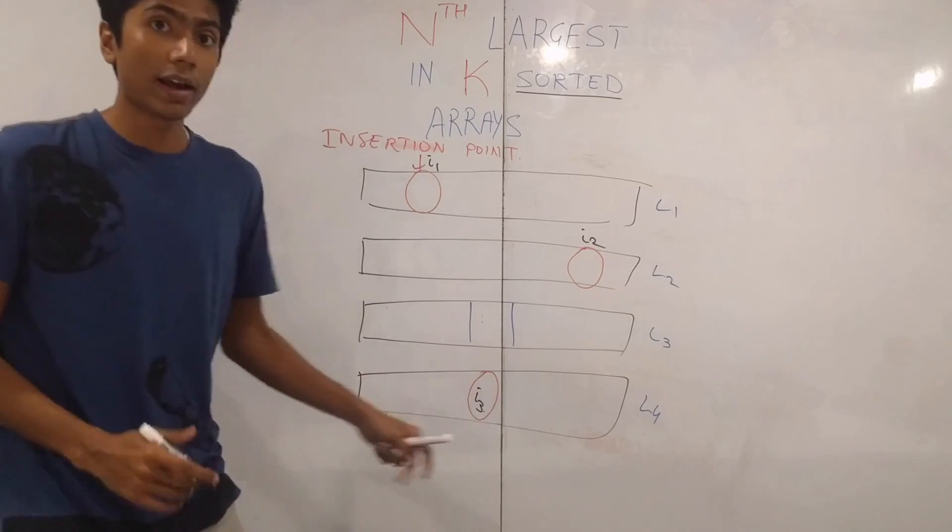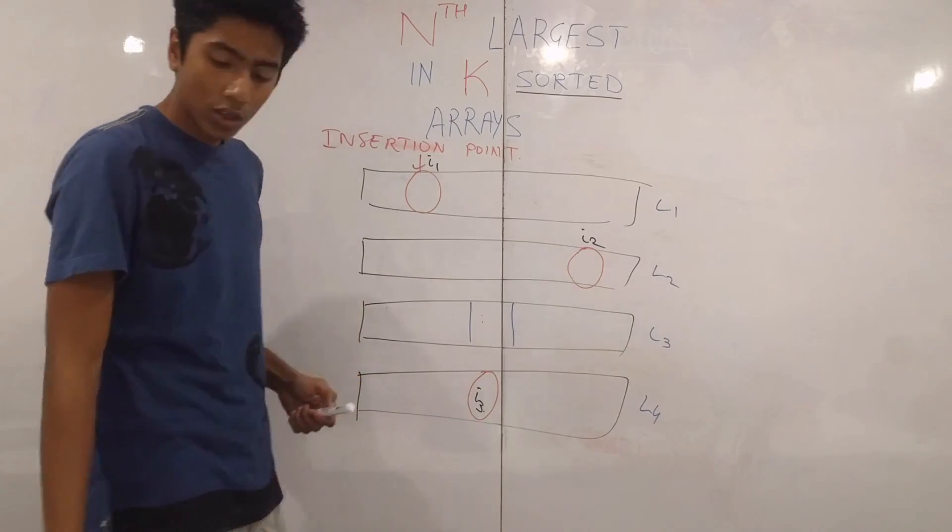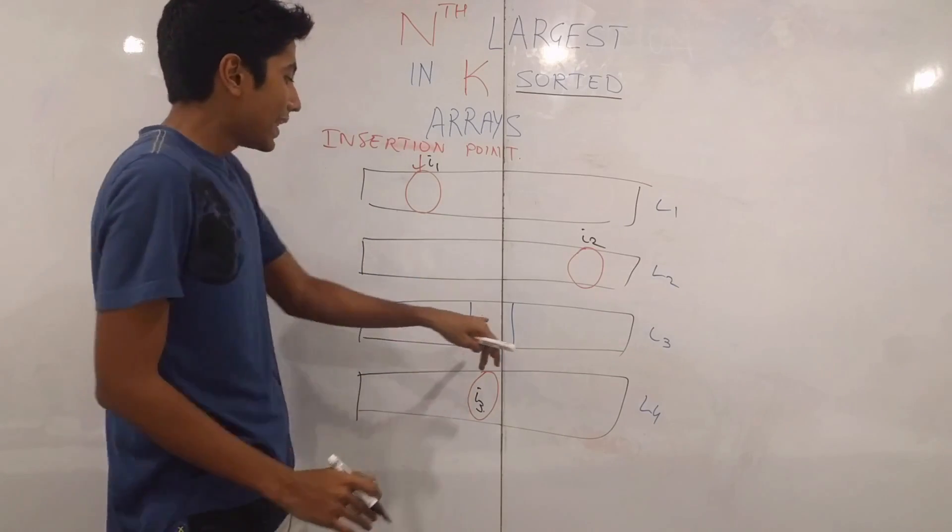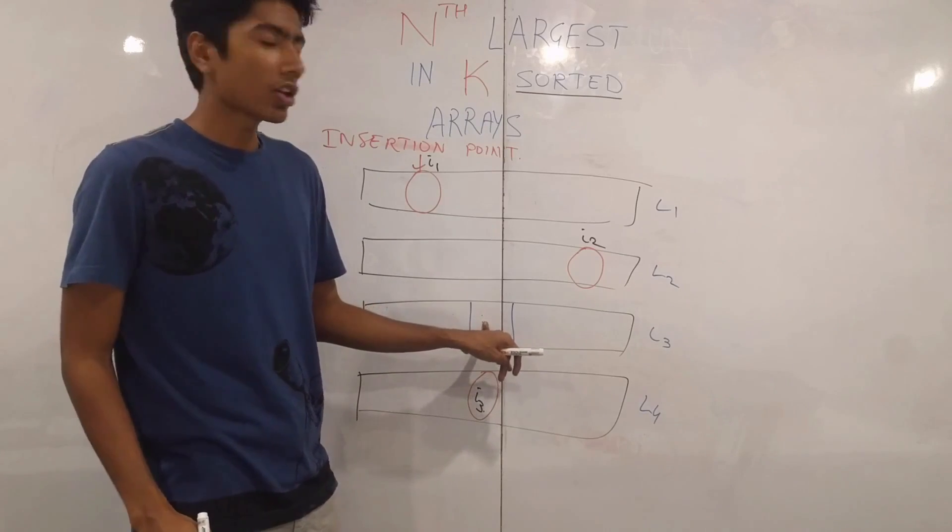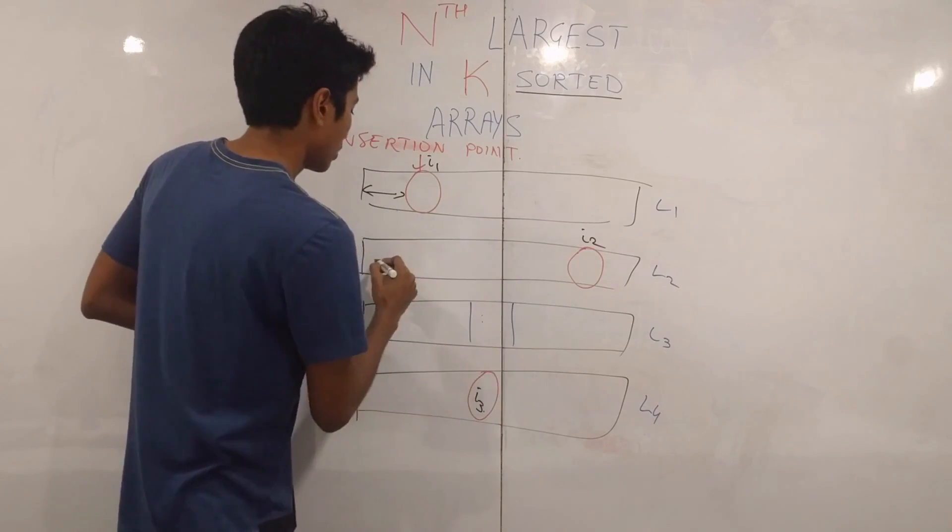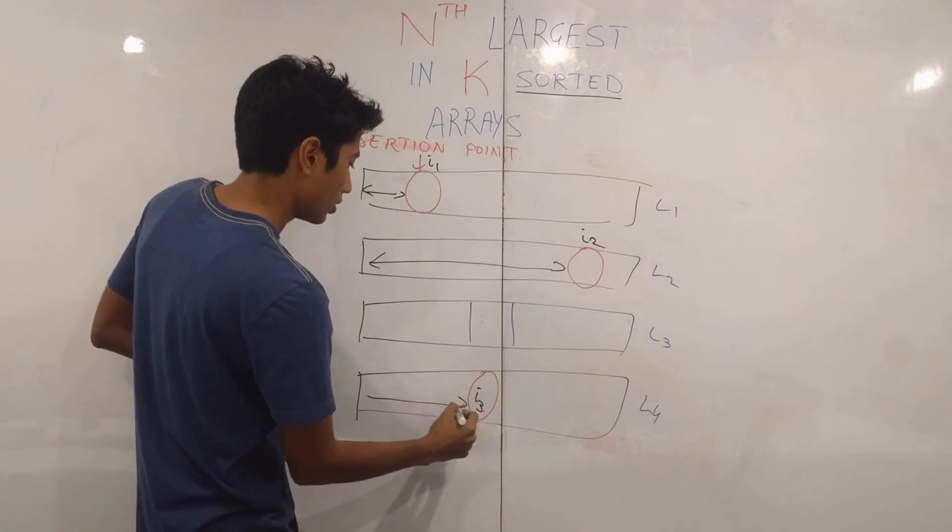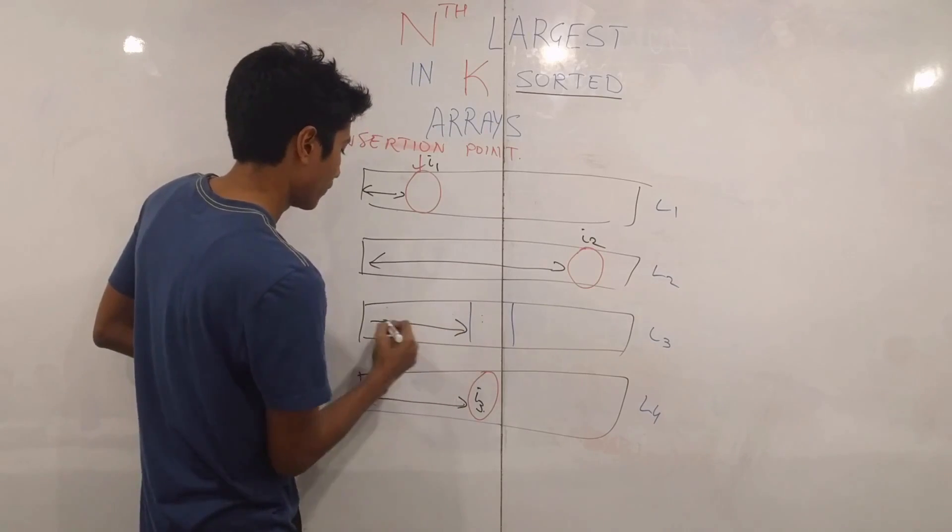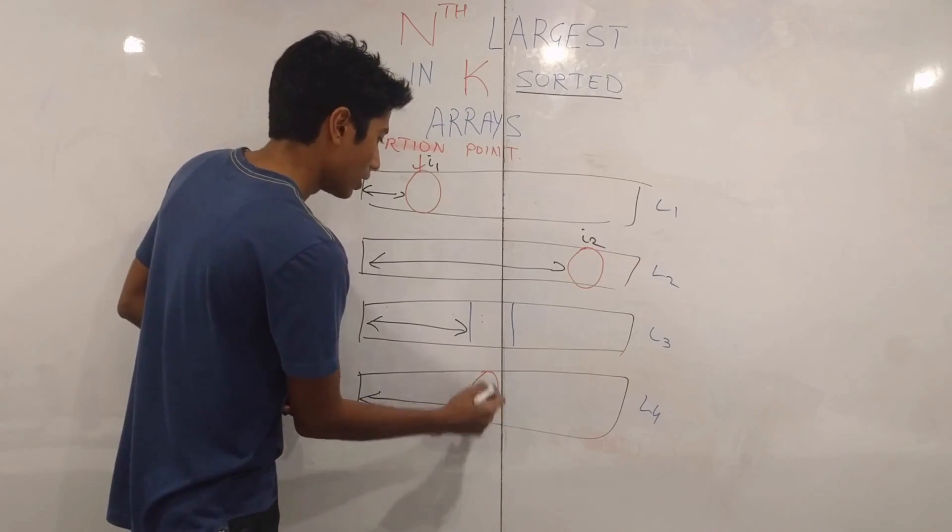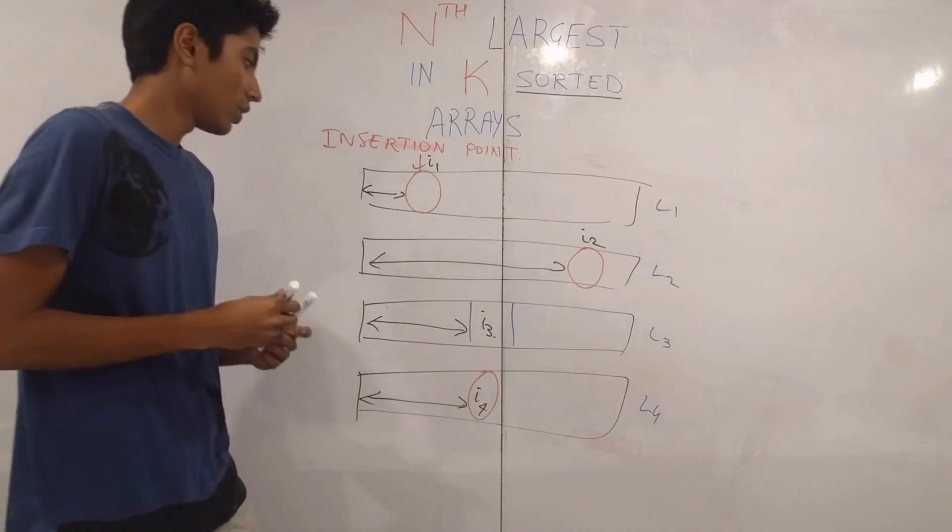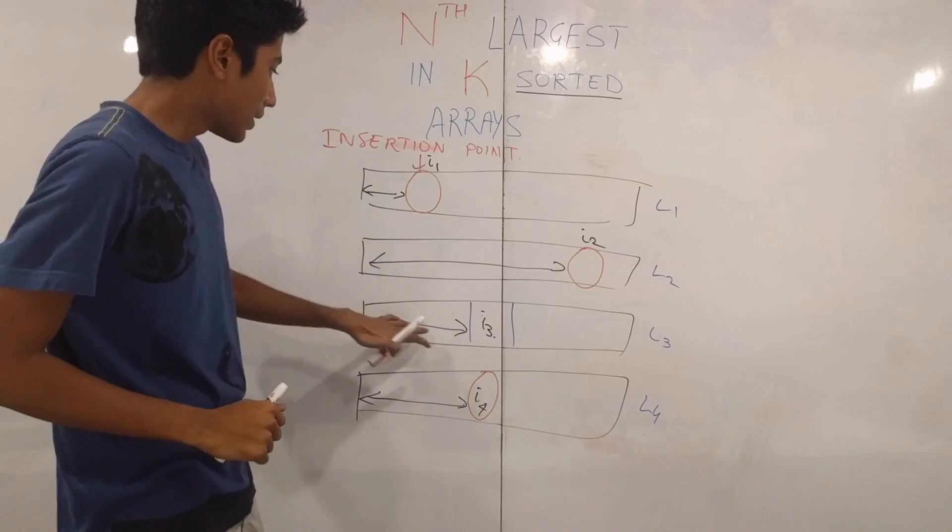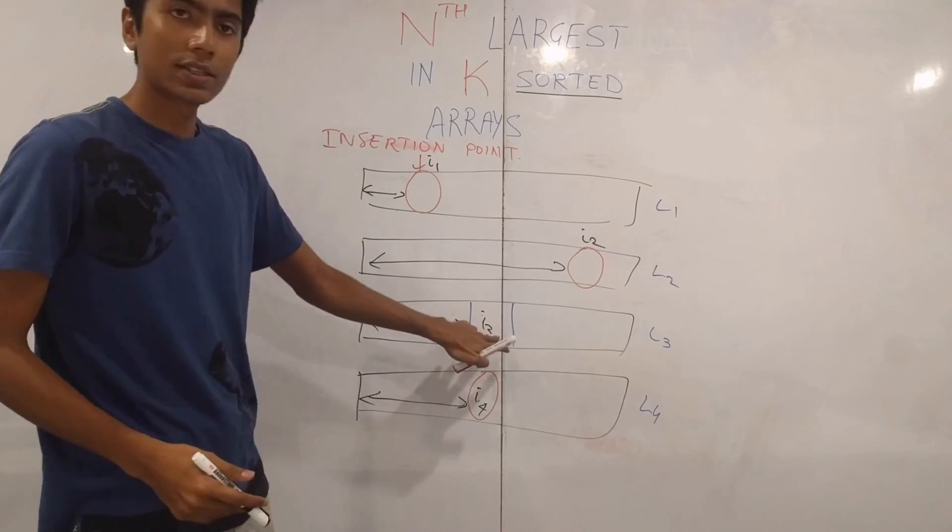These are indexes not the values. So all elements which are lesser than this particular element lie over here, here, here, and here. So in fact to simplify, let's keep this i4 and let's take i3. So we see that these are the indexes which are smaller than this element.